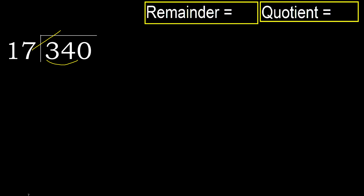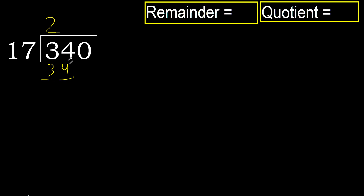17 multiplied by 3 is 51 — 51 is greater. 17 multiplied by 2 is 34 — 34 is not greater.